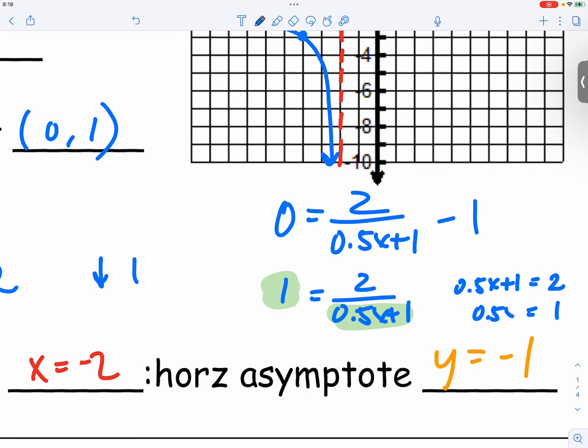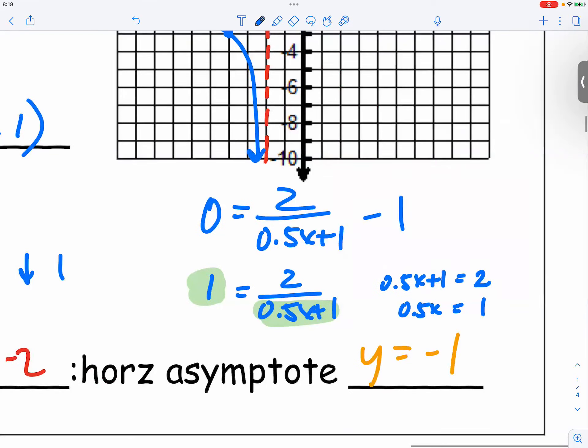So we have 0.5x equals 1. And you divide by 0.5 on both sides. What's 1 over 0.5? It's equal to 2.